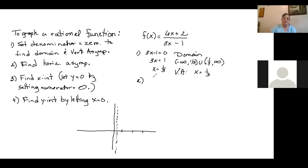For your horizontal asymptote, because the degree of the top and the bottom is the same, we use the coefficients. So that's going to be the horizontal line y equals 6 over 3, which is y equals 2. So we've got a vertical asymptote here.